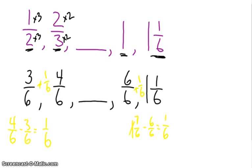So, what this means is that my missing number here is going to be 1 sixth greater than 4 sixths, and it's going to be, going back this way, 1 sixth less than 6 sixths. So, I can do one of two things. I can do 6 sixths minus 1 sixth.